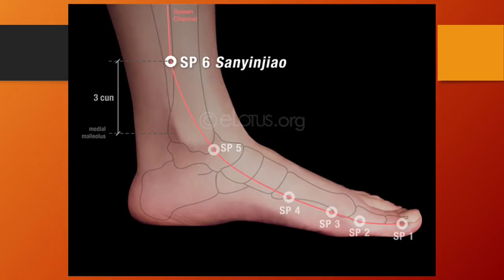Spleen 6, Sanyinjiao or three yin intersection, is located on the medial aspect of the lower leg, 3 tsun above the medial malleolus, on the posterior border of the medial aspect of the tibia. It is the crossing point of the spleen, kidney, and liver channels. Because the point crosses the spleen, kidney, and liver channels, it can treat many conditions associated with all three organs. Needling: perpendicular insertion, 1 to 1.5 tsun. Do not needle during pregnancy.